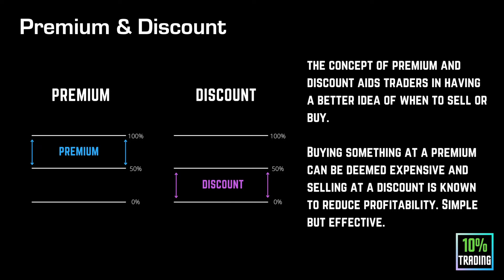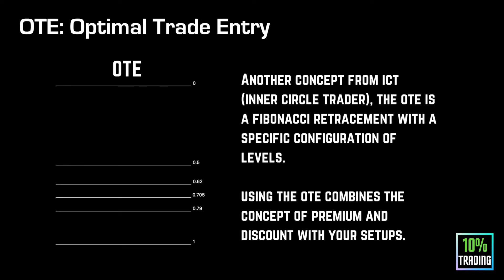I'll show you how to use that on the charts in a second. The next concept is OTE — a lot of people are catching on to this now. This is another concept from ICT; I also taught kill zones in a previous video, which is from ICT as well. Essentially, the OTE is just a fibonacci retracement with specific levels: 0.62, 0.705, and 0.79. You also have your 0.5 (50%), your zero and your one, so these automatically tell you your premium and discount once applied to your charts.